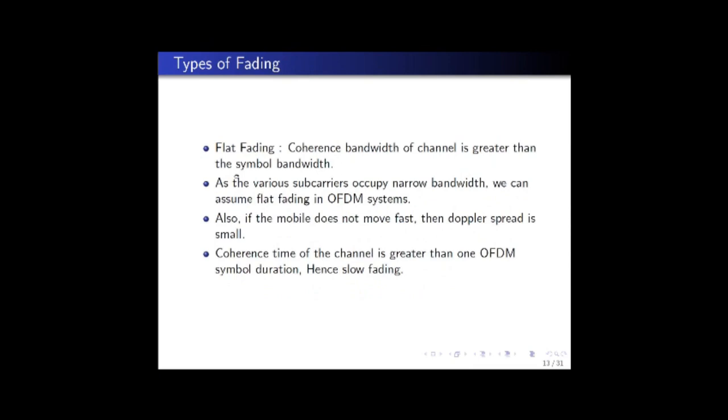We will discuss the different types of fading and a few reasonable assumptions made in the case of OFDM which makes channel estimation easier. Since in OFDM a large number of narrow band subcarriers are used, the coherence bandwidth of the channel can be assumed to be much larger than the narrow band of the subcarrier, and hence the subcarrier can be assumed to undergo just flat fading and not frequency selective fading.